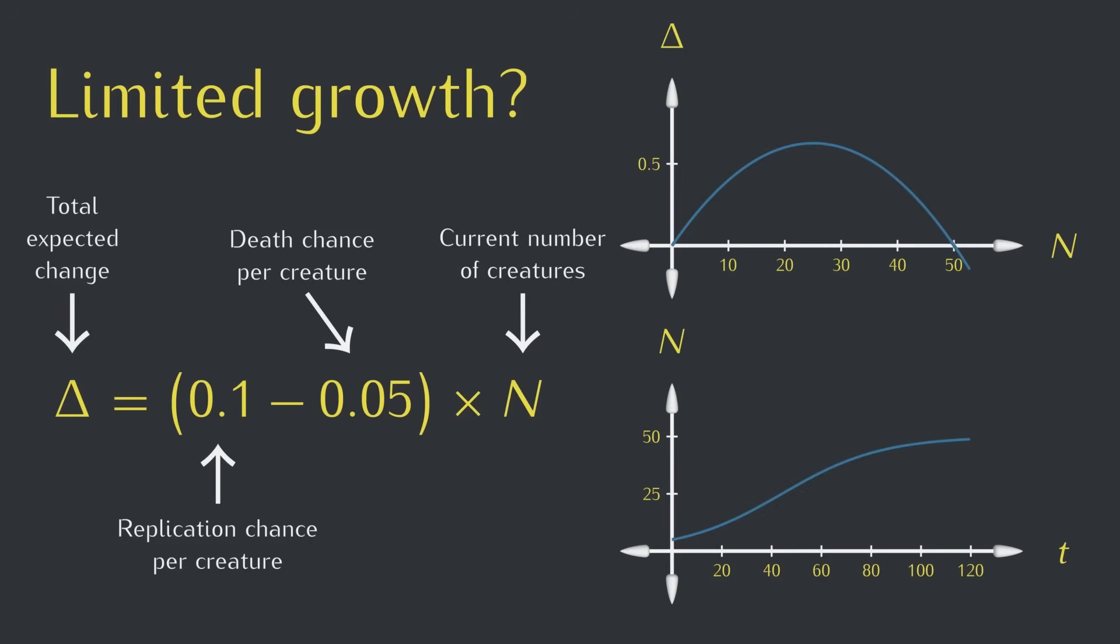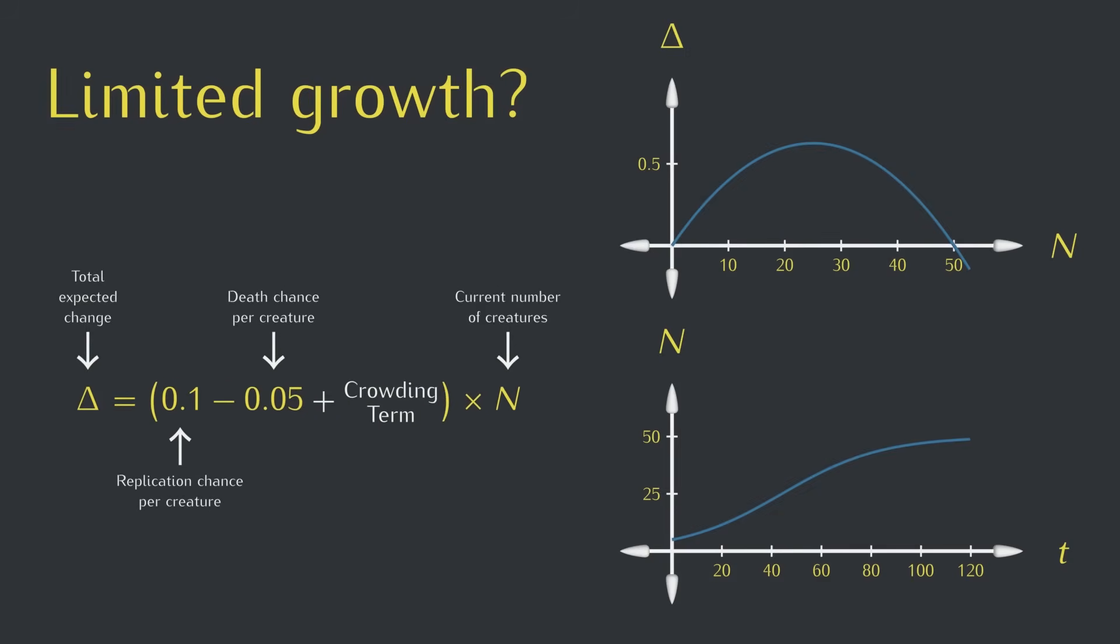To do this, we'll leave the base death chance alone, but we'll include an extra term to adjust the overall death chance based on crowding. What should this term be? Well, we want the term to be small when there aren't many creatures, and we want it to be big when there are a lot of creatures. A simple way to achieve this is to write it as the current number of creatures multiplied by a constant.